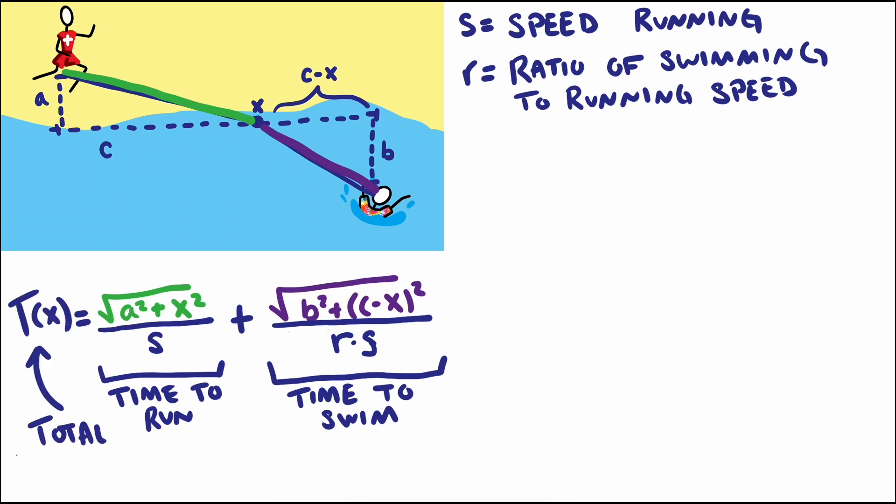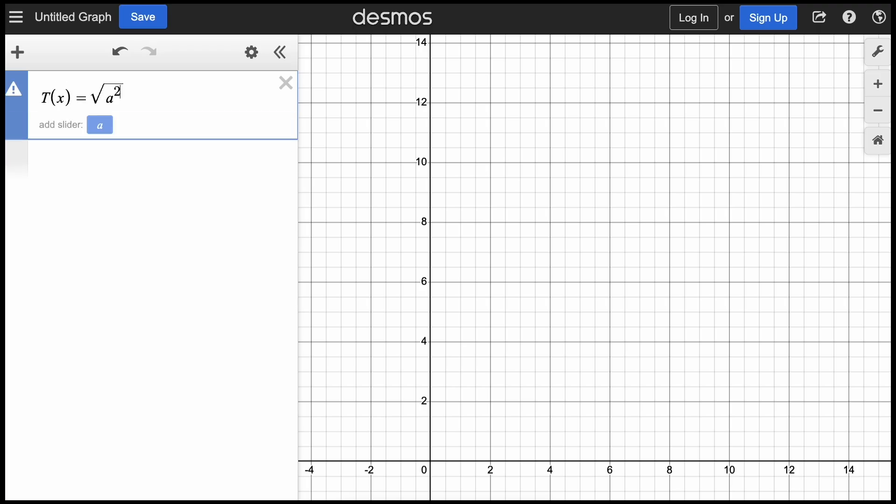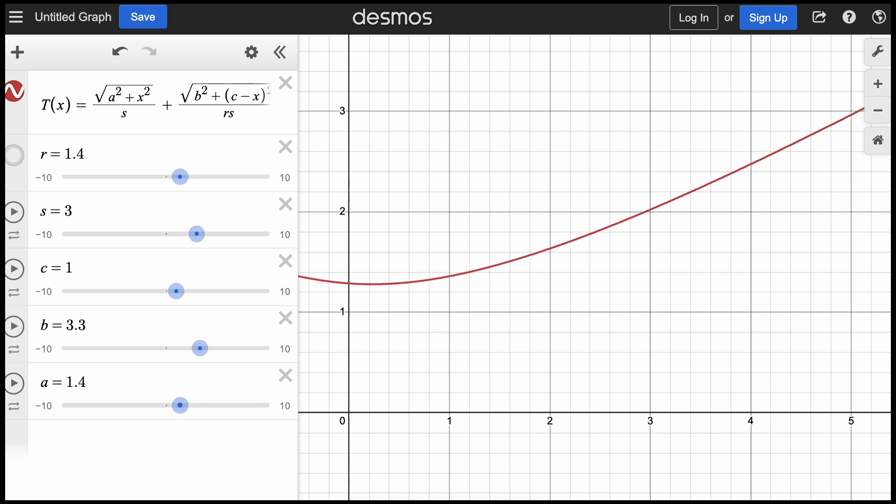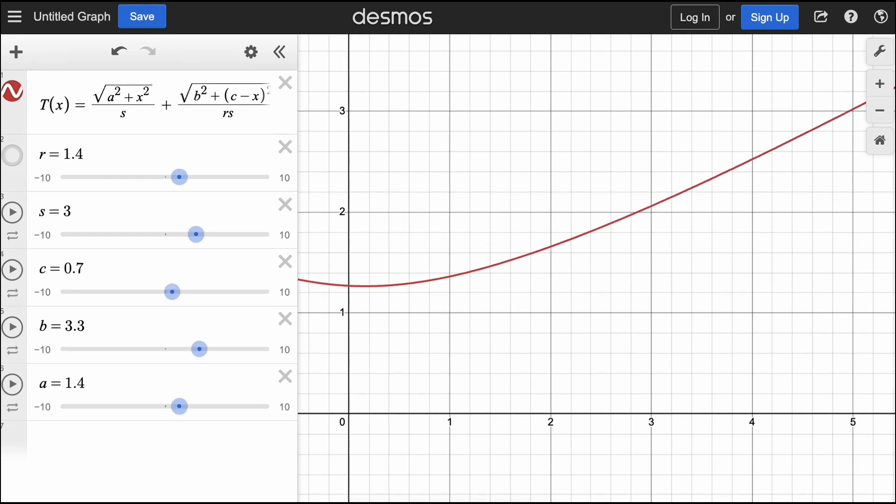Adding these two times together gives us a formula that would calculate the time for the entire trip based on the distance and speeds. Our goal for this problem was to minimize the time of the whole trip. Looking at this equation on a graph, and using sliders to assign arbitrary values for our variables, we can see that there is some value of x that minimizes the time this trip should take.